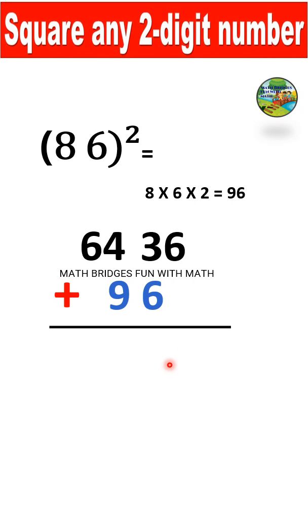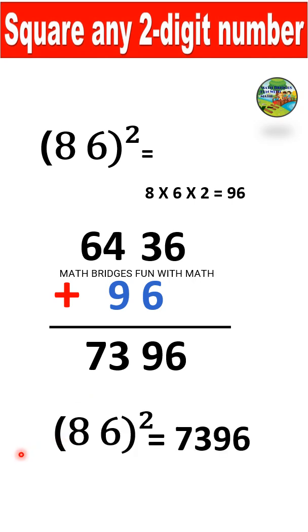Now, add to this in such a manner as discussed in the previous slide. So, 6, 6 plus 3, it is 9. And the sum will be 7396. It will be 86 square.